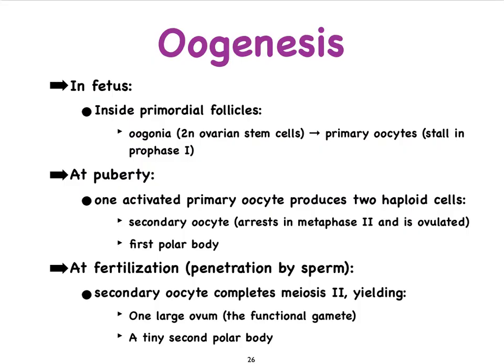Development of the female gametes, or better referred to as oogenesis, is best studied by dividing the whole process into three time periods. And that is what happens in the fetus, what happens around puberty, and what happens in the event fertilization occurs. I'm going to use the next slide to expand on these different life phases.